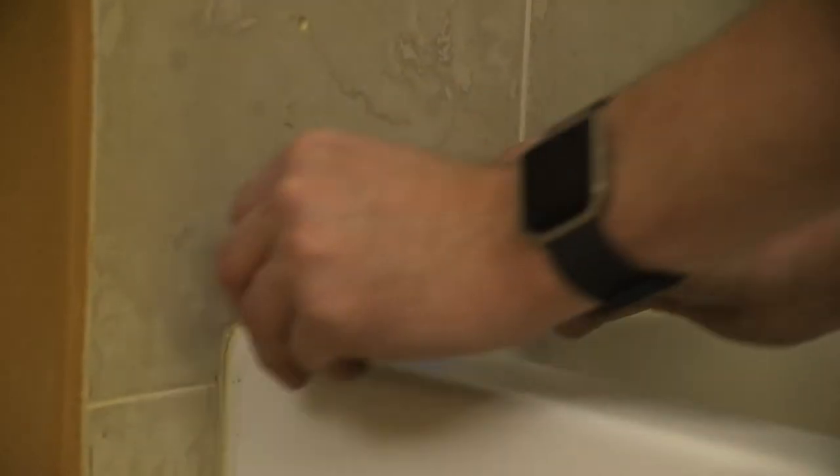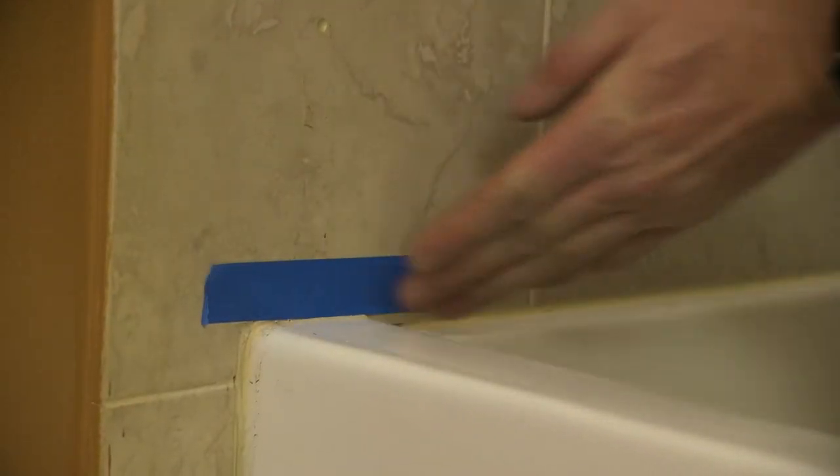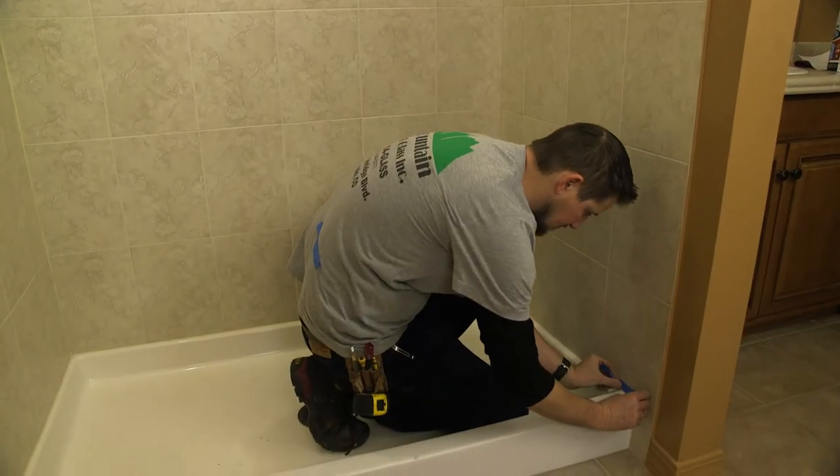Begin by placing a strip of tape at the desired or maximum height of the enclosure. Then place a strip at the approximate middle and at the bottom of the enclosure as shown. Repeat on the other wall.